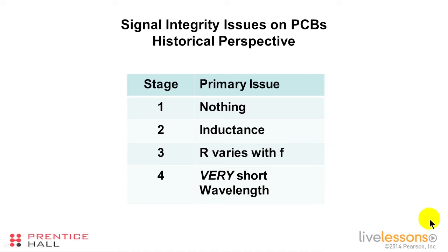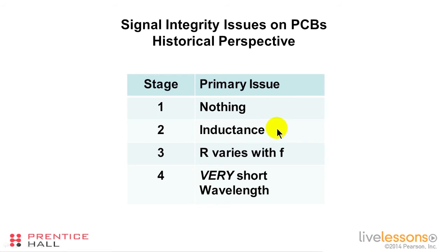In my experience, it seems to me that in the history of signal integrity issues on printed circuit boards, we've gone through four stages. The first stage was kind of trivial — there were no signal integrity issues on circuit boards; it was truly a connect-the-dots kind of technology. In the second stage, we began to run into problems from inductance that occurred on the board, both in the traces and in vias, and this began to cause some signal integrity issues.